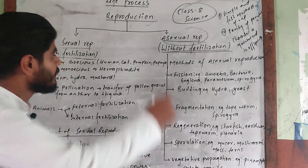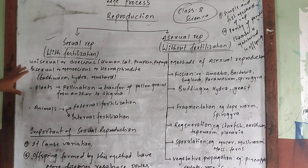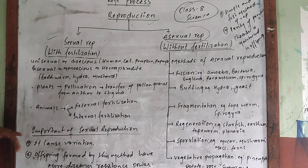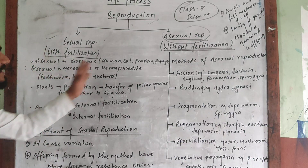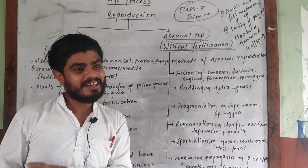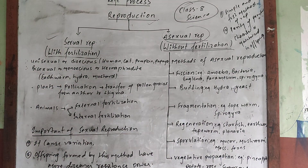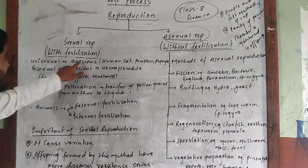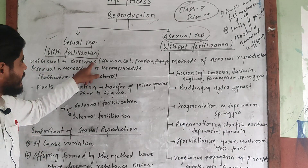Now if we look at sexual reproduction, we can find its importance. Sexual reproduction is done by fertilization. Fertilization is part of sexual reproduction. In sexual reproduction, the organism can be unisexual, which means one sex organ is present — also known as dioecious. For example: woman, cat, pumpkin, papaya.